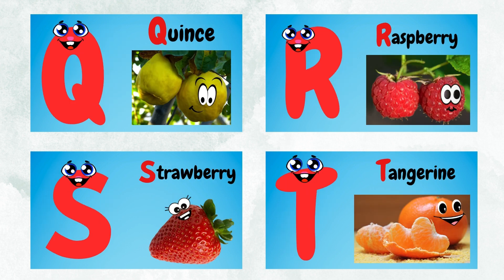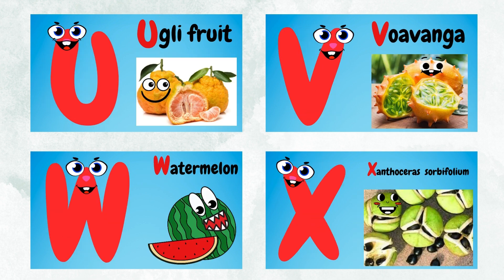R for raspberries, S for strawberry, T for tangerine, U for ugly fruit.